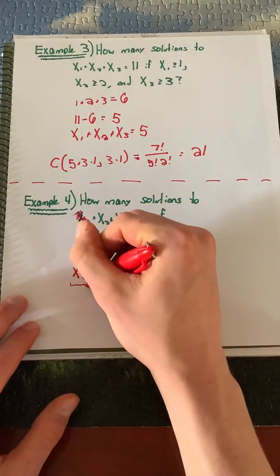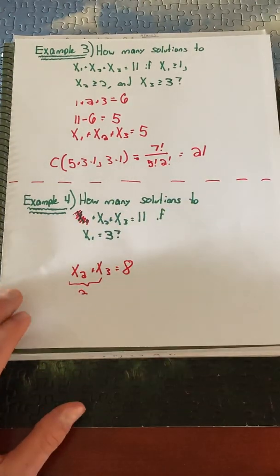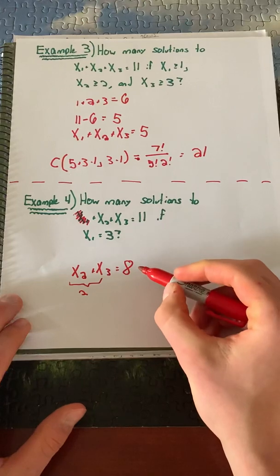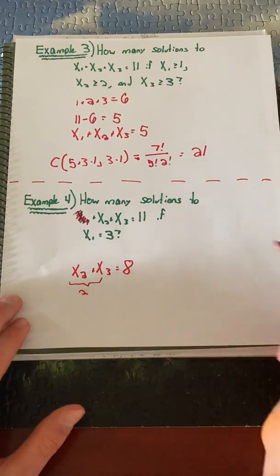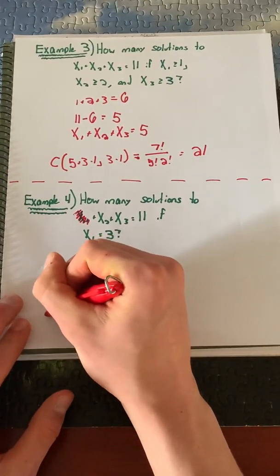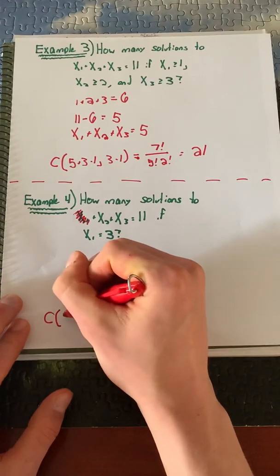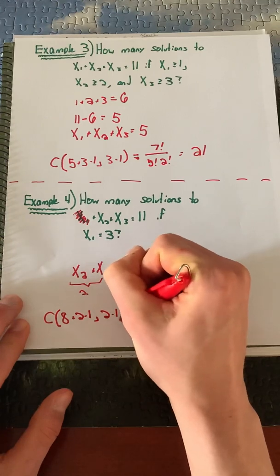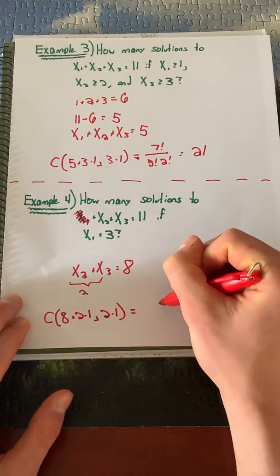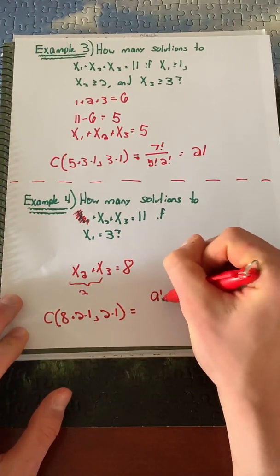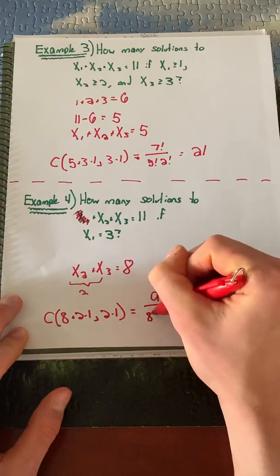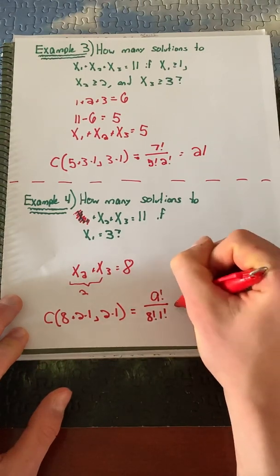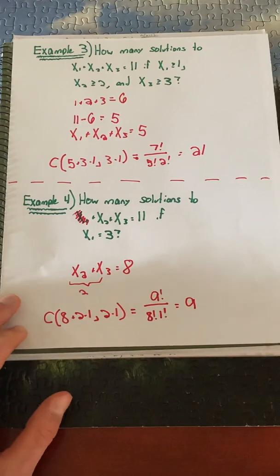We only have two variables and we're trying to see how many ways those two variables can add up to 8. Following our stars and bars theorem, this gives us C(8+2-1, 2-1) combinations, which equals 9!/(8!×1!), which equals 9 different ways.